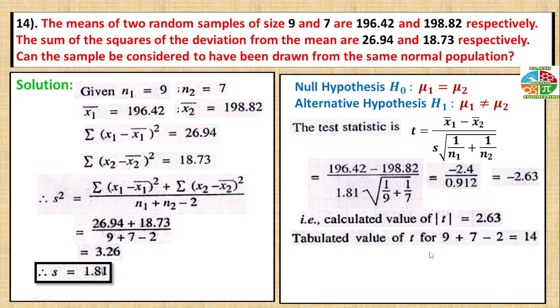Now for the table value. Degrees of freedom equals n1 plus n2 minus 2, which is 9 plus 7 minus 2, equal to 14.